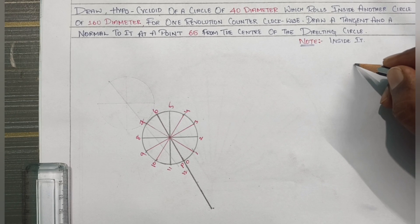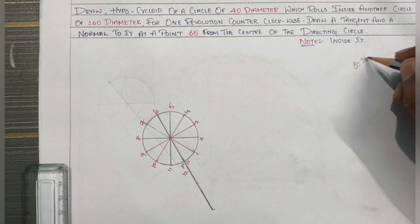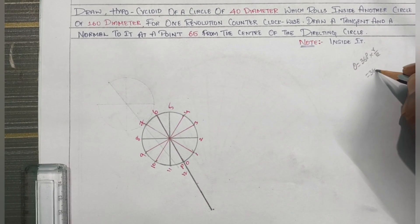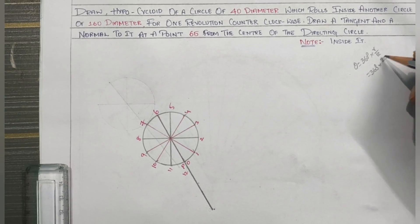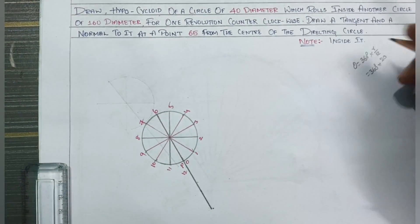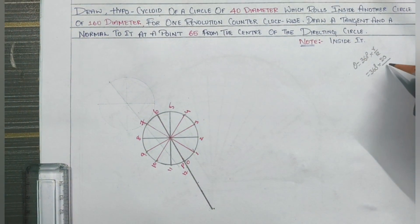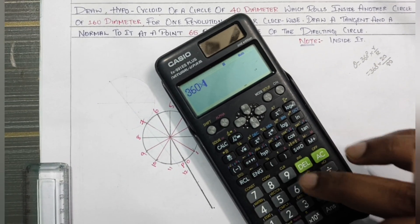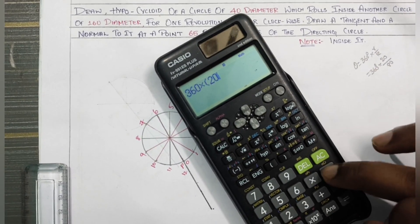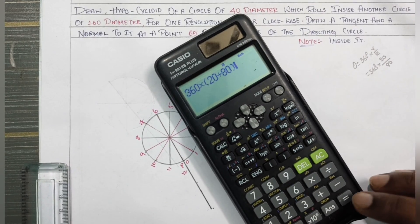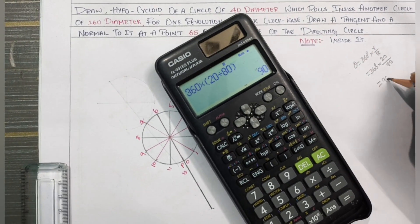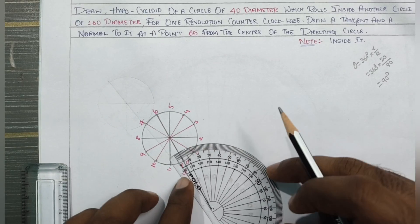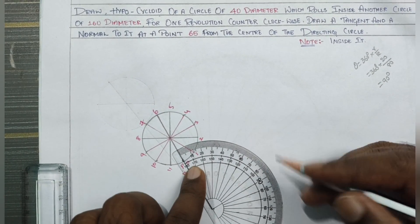Next, apply the theta formula. Theta equals 360 multiplied by r over R, which equals 360 multiplied by the smaller radius 20, divided by the larger radius 80. So theta equals 360 times 20 divided by 80, which gives 90 degrees. This point and line will meet exactly at 90 degrees.